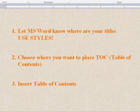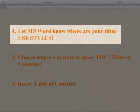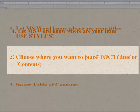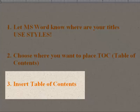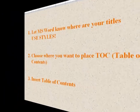To insert a table of contents, all you need to do is these three steps. First, let Microsoft Word know where your titles are. For that, you will need to use styles. That means you need to tell MS Word that these are the headings of my document, so they should be included in the table of contents. For that purpose, we use styles. After that, we need to choose where we want to place the table of contents — whether on the first page, second page, or third page. And finally, we will insert a table of contents at that position.